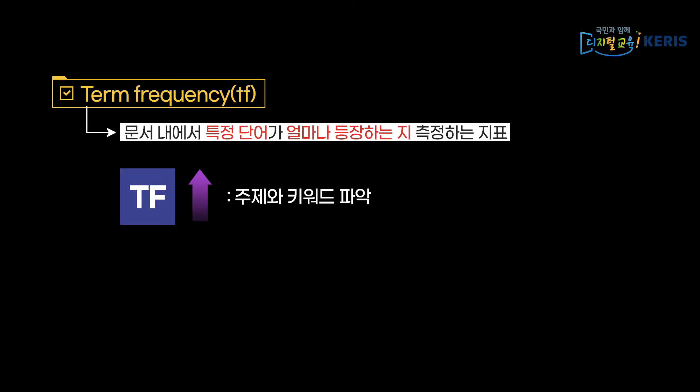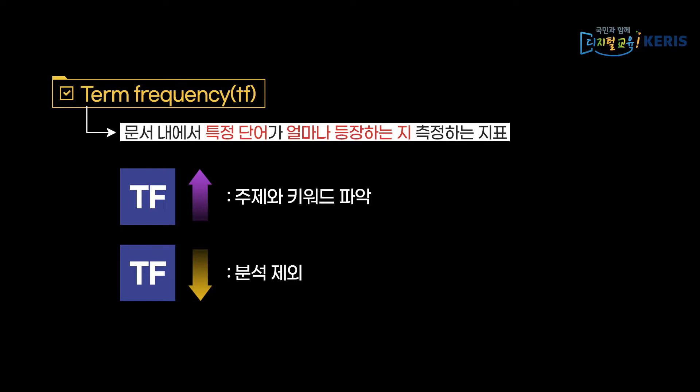TF가 큰 단어를 통해 해당 문서의 주제와 키워드가 무엇인지 파악할 수 있고, 반대로 TF가 낮은 단어는 일반적으로 중요하지 않기 때문에 분석에서 제외하는 것이 좋습니다. 하지만 TF만으로 단어의 중요도를 파악하는 것에는 문제가 있습니다. 출현 빈도가 낮더라도 문서에서 핵심 단어일 수 있고 그 반대가 될 수도 있기 때문입니다.